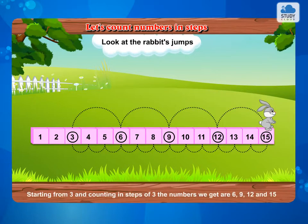Starting from 3 and counting in steps of 3, the numbers we get are 6, 9, 12 and 15.